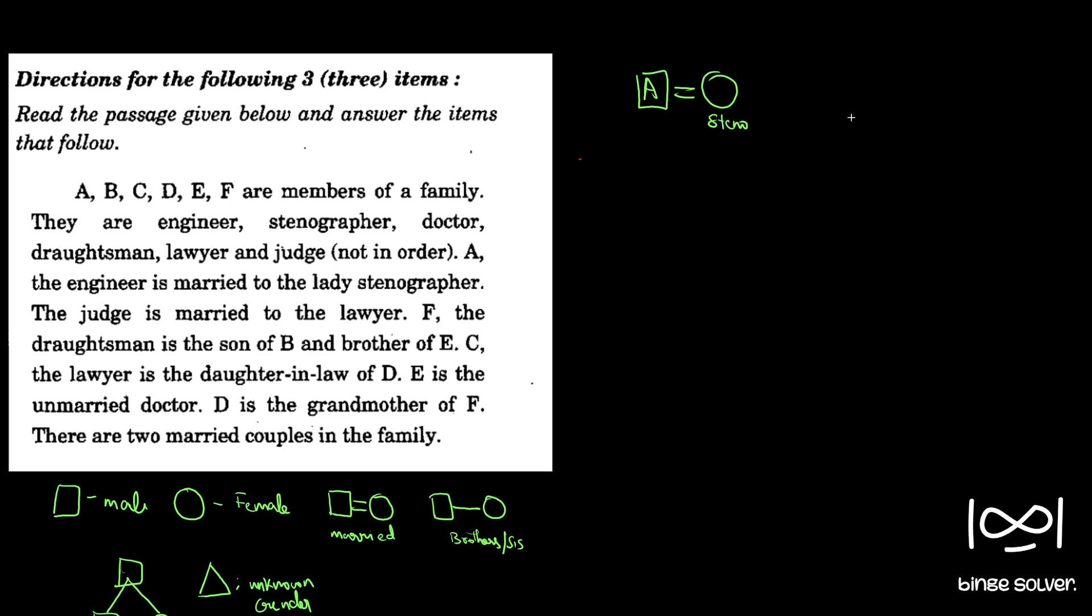The judge is married to the lawyer. We don't know the gender of the judge, so I will just draw a triangle. Judge is married to a lawyer.